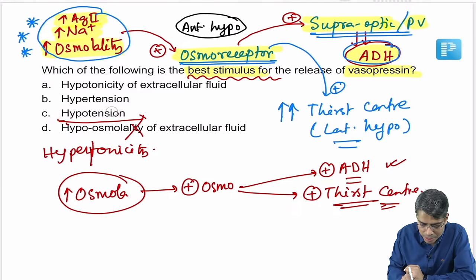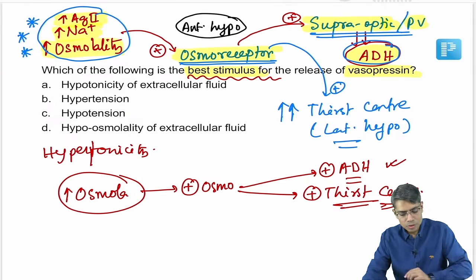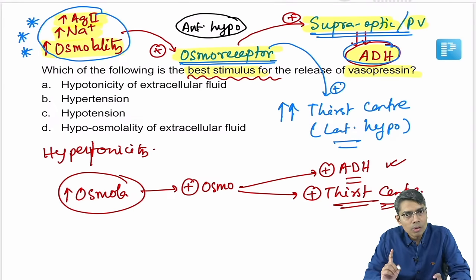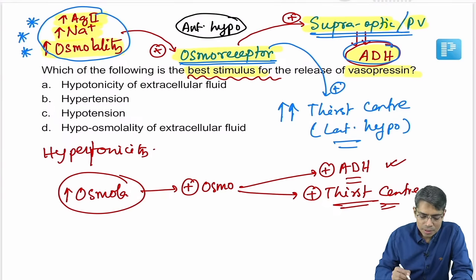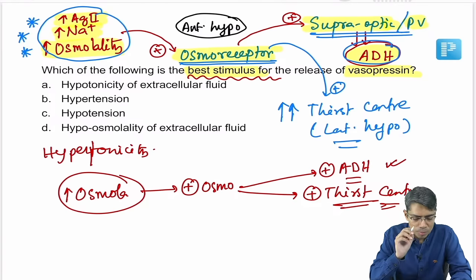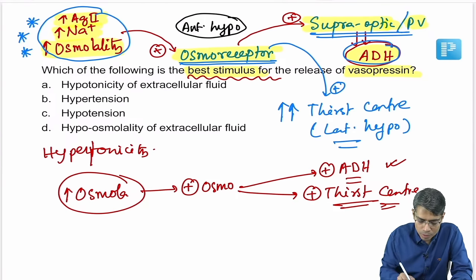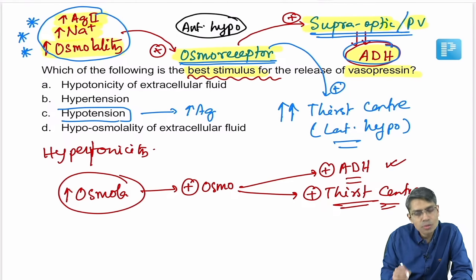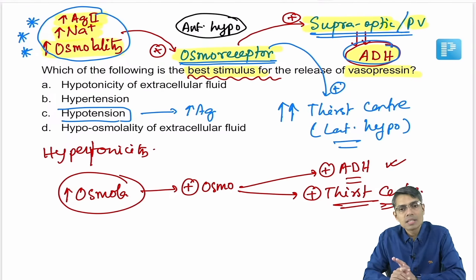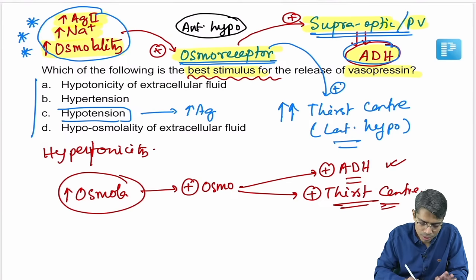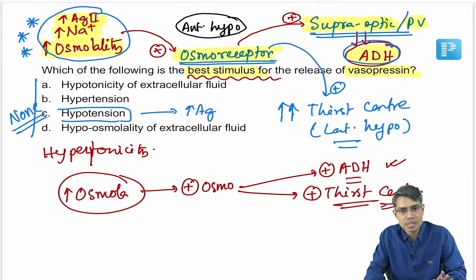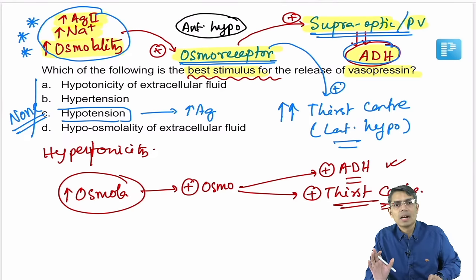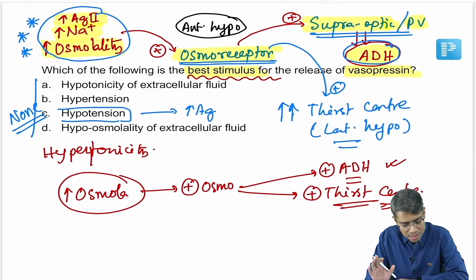The answer here is none, because only hypertonicity of the extracellular fluid is the best stimulus. If forced to choose, hypotension can indirectly release angiotensin 2, which then releases ADH, but it is not the best stimulus. This may be a wrong recall or a printing mistake in the question.